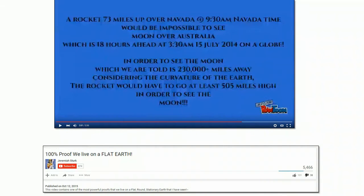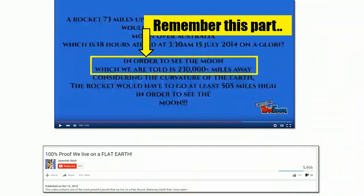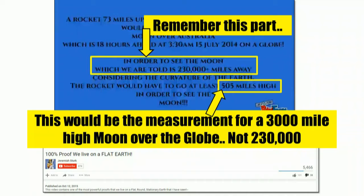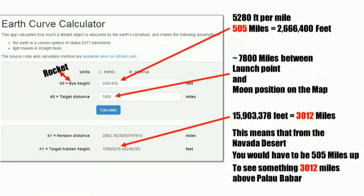In his text, it says in order to see the moon, which we are told is 230,000 miles away - mind you, he quoted 230,000 miles away, which means that should be the numbers that he's using - considering the curvature of the Earth, the rocket would have to go at least 505 miles high in order to see the moon. Sounds like a guy who can crunch some numbers, right? Well, if you actually do the math, that 505 miles is considering that the moon is 3,000 miles high above the actual measurements of the globe. So you're mixing the two things on purpose. That's lying.